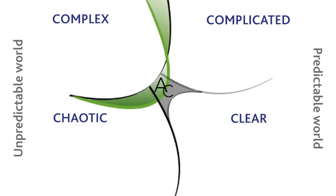In moving out of aware and confused, the predictable or ordered world on the right divides into two: clear and complicated. In these ordered systems, there is a linear relationship between cause and effect. The same thing will happen again and again, not by accident but by the nature of the system. If I follow the same recipe when I bake my Christmas cake, the same oven, the same time, the same temperature, I can be fairly certain of the same result as last year. It's clear, simple and obvious.